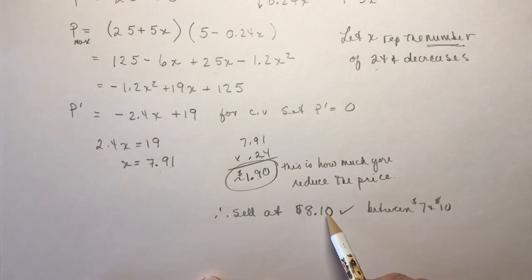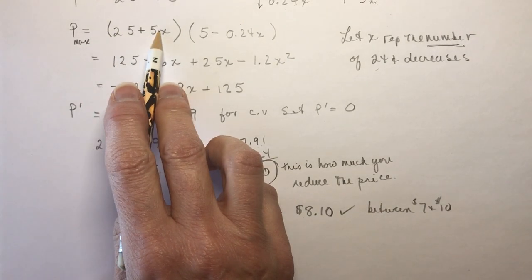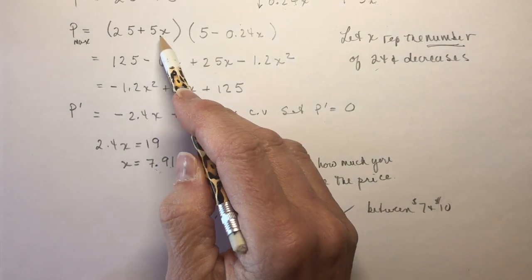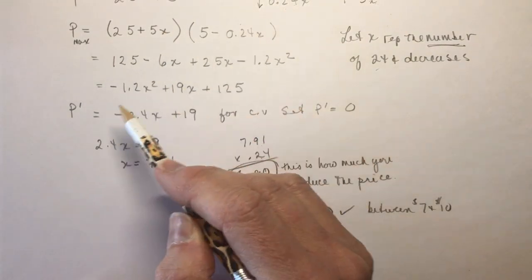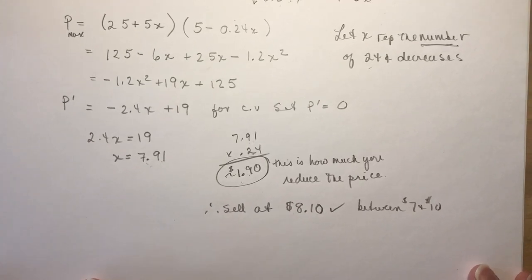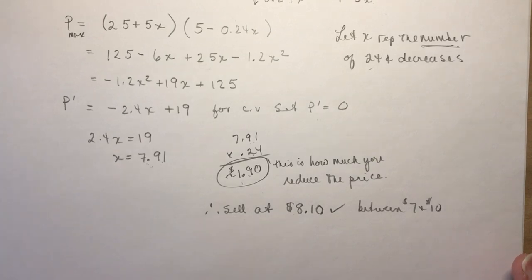Okay, so you could figure out the profit if you wanted to, just plug it back in here. Put in your 7.91 here, 7.91 here, and you'll get your profit. Okay, so that's four of the questions, and I'll try to get to the last two hopefully tomorrow when I'm feeling just a little bit better. Bye for now.